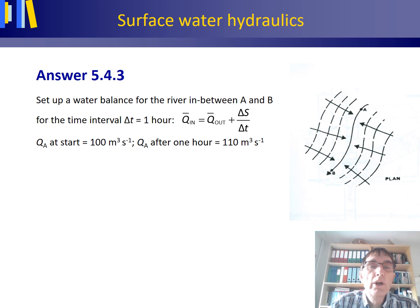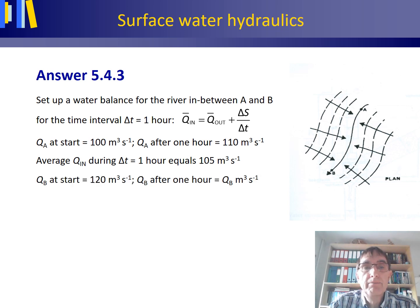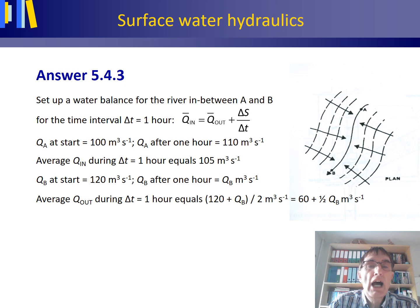QA at the start is 100 cubic meters per second and QA after one hour is 110 cubic meters per second. So the average inflow during the one hour equals 100 plus 110 divided by 2, which is 105 cubic meters per second. QB at the start is 120 cubic meters per second and QB after one hour is what we want to know. So the average outflow during the one hour equals 120 plus the unknown QB divided by 2, which is 60 plus half of QB.